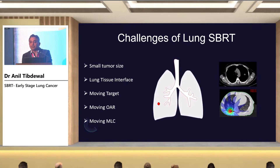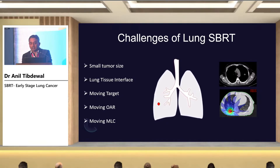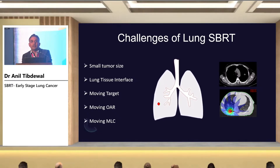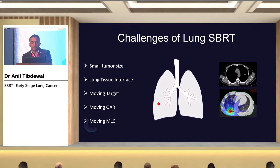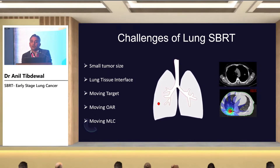The features of lung SBRT can also be challenges. Because we are treating smaller tumor sizes, radiation machines must be equipped for smaller field treatment. There is a lung tissue interface — a density change between soft tissue, lung, and soft tissue again. The target is moving, the lung itself is moving, and the multi-leaf collimator is also moving. This poses particular challenges, especially for lower lobe tumors.